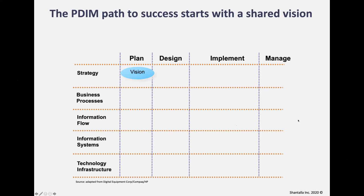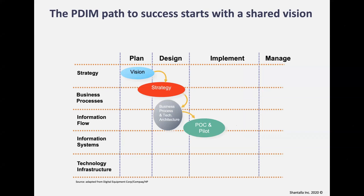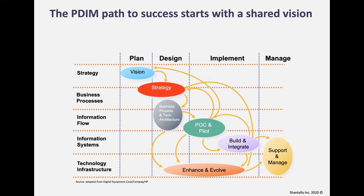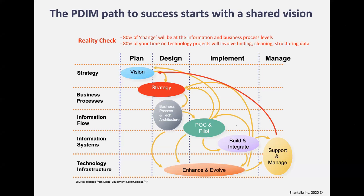The PDIM model: every project needs to be planned, designed, implemented, and managed. Coming up with a vision is often very hard — vision drives strategy, which drives business processes and technical architecture. I recommend starting with a proof of concept with whatever technology, because it helps define and refine your vision, strategy, business processes, and technical architecture. It's an iterative model. The reality check: 80% of change will be at the information and business process level, and 80% of your time in technology projects will involve finding, cleaning, and structuring the data.